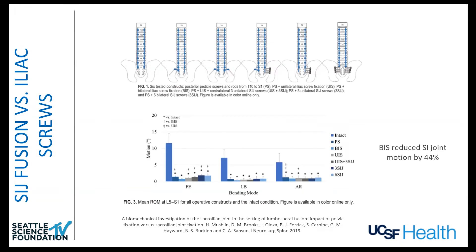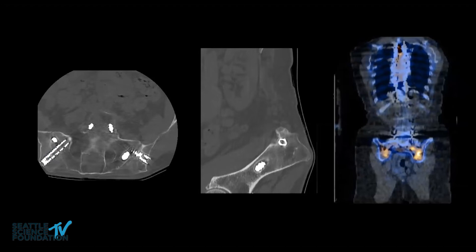Biomechanically, bilateral iliac screws had the same reduction in SI joint motion as six SI joint fusion devices — so you're dropping SI joint motion significantly just by having pelvic fixation. The caveat is that this was a biomechanical study; these screws can still loosen over time, especially in patients with osteoporosis. Iliac fixation or S2AI screws can loosen and may then lead to SI joint pain — as happened with one patient who ended up needing SI joint fusion after their S2AI screws.